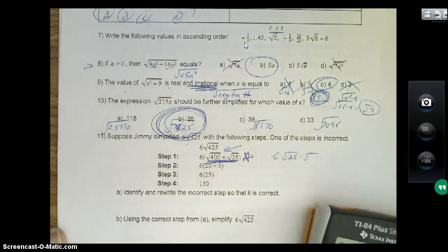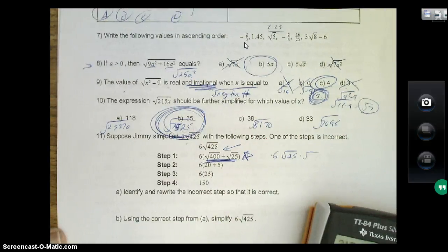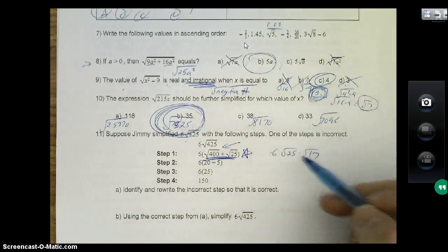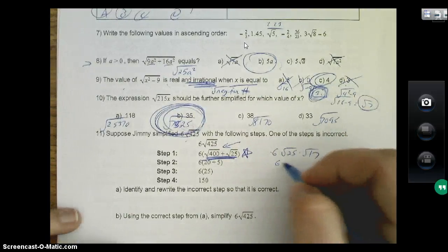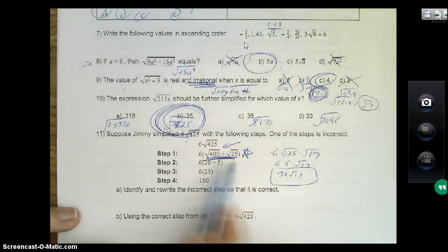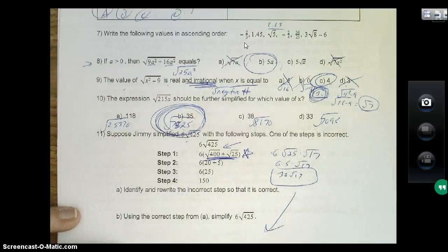So what he's looking for really is 6 square root of 25 times—let's see, 425 divided by 25 is 17. All right, so now what's the square root of 25? Well it's 5. So then we get 30 root 17. So I understand the thought behind this, but you have to break it up by multiplication instead.